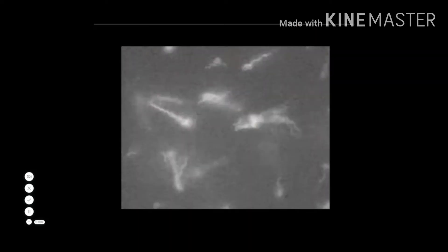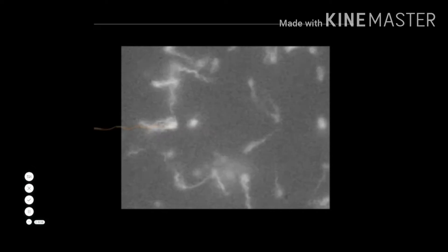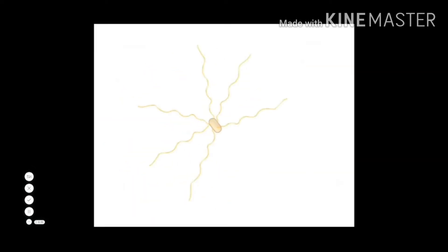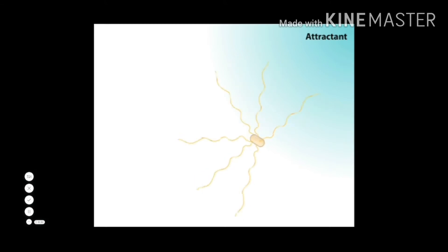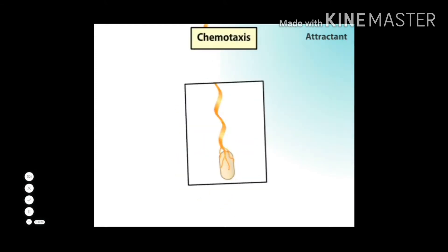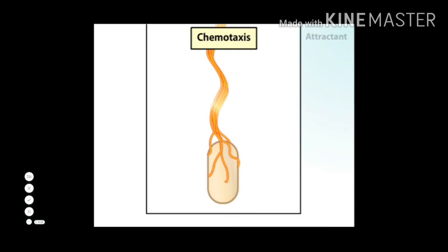In both these cases, bacteria responds to the presence of nutrient or toxin by bringing about changes in its flagellar movements. For example, if there is any attractant present in the environment — whether it is a nutrient, favorable temperature, or favorable pH — then bacteria will move towards this attractant as shown in this video.